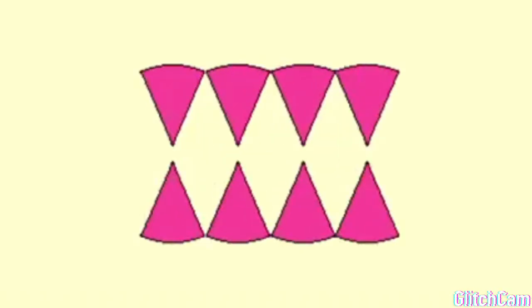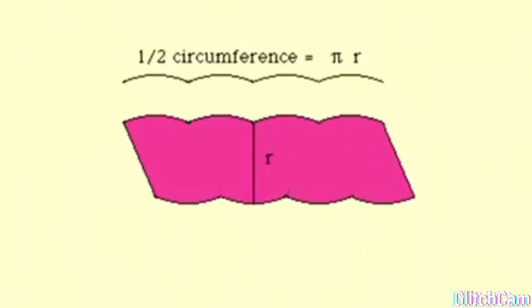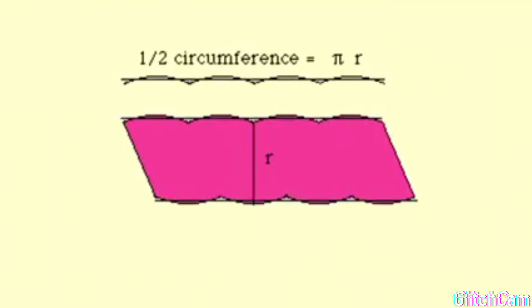As more triangles are cut, the curved end produces less pronounced bumpiness and straight sides come closer to being straight up and down. The approximation obtained in this manner would be even better.